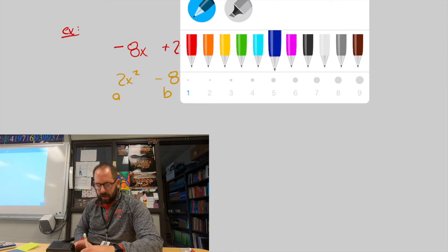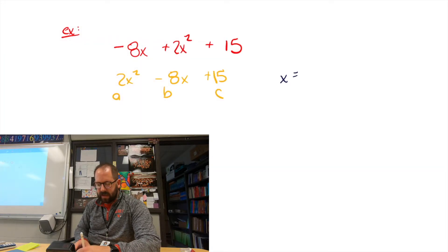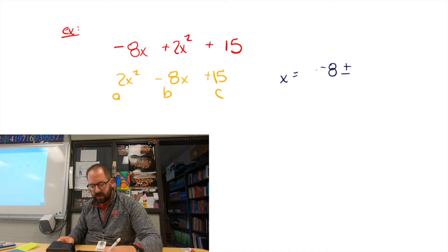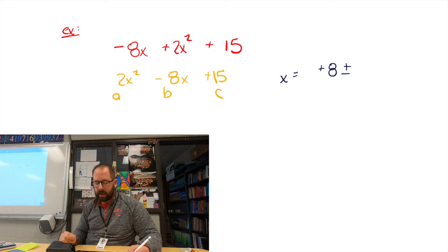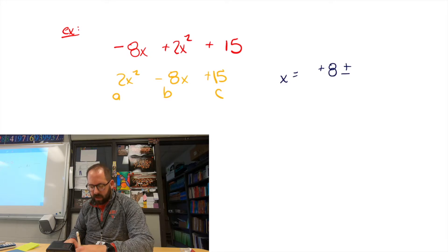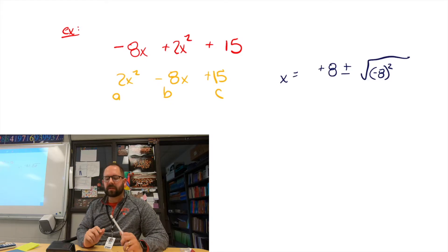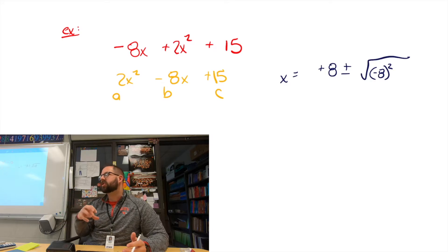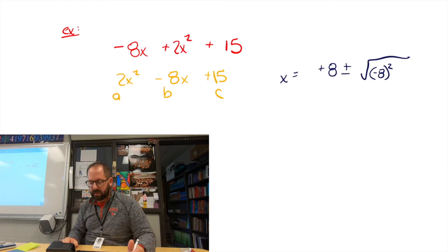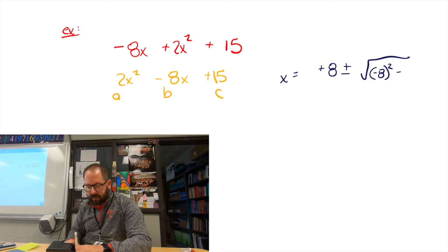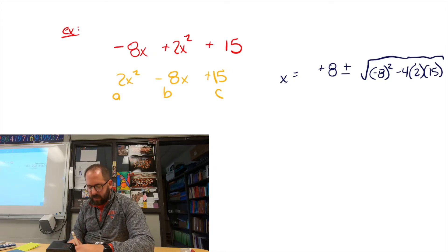Doing the math here: x equals negative negative 8. The opposite of B — when you do negative negative 8, that turns out to be positive 8. Plus or minus the square root of negative 8 squared, which will also turn positive. Do put the parentheses around it — somebody was making that mistake yesterday, forgetting the parentheses, so they were getting a negative number when they took the square. Then minus 4 times A times C, all divided by 2 times A, which is 2 times 2.